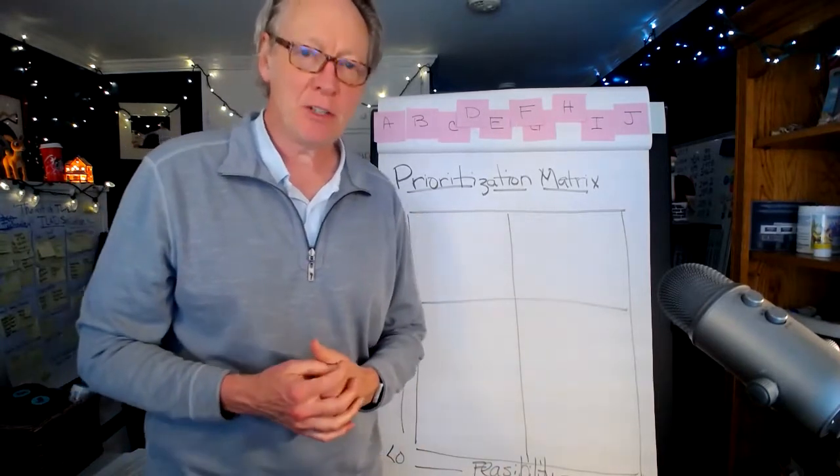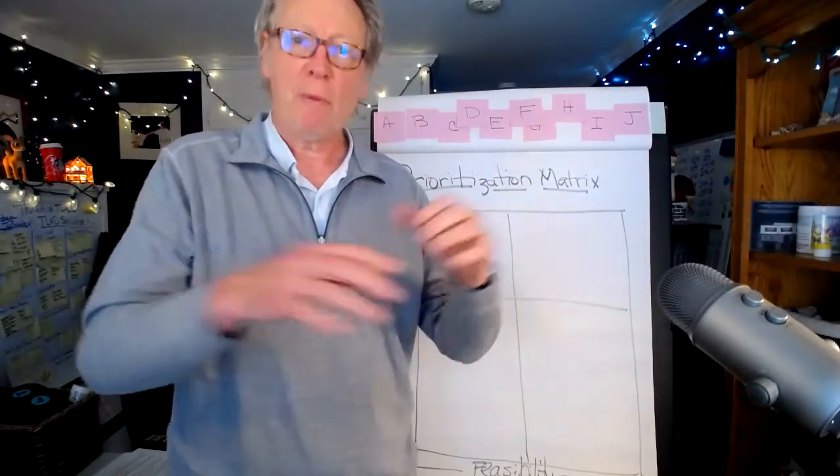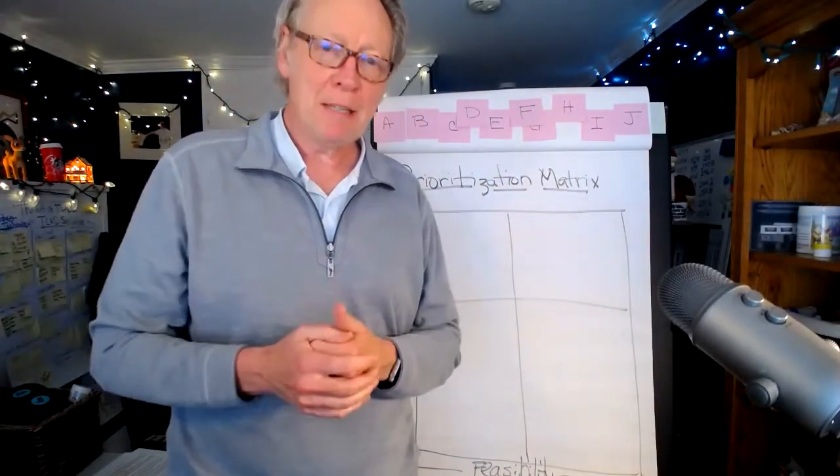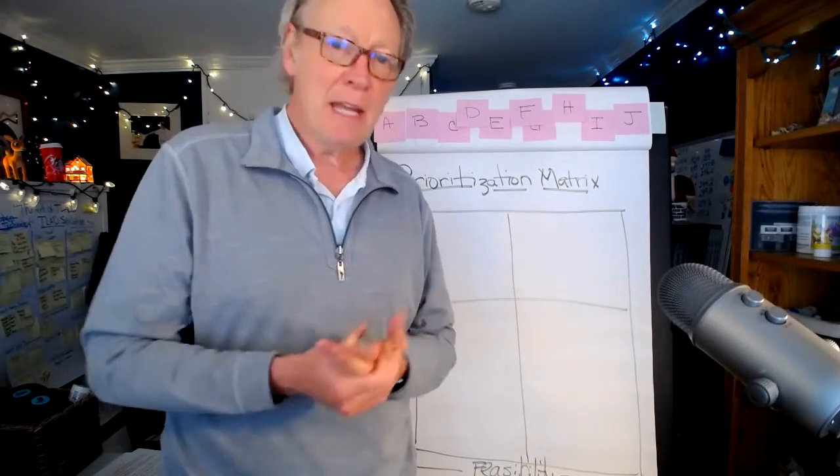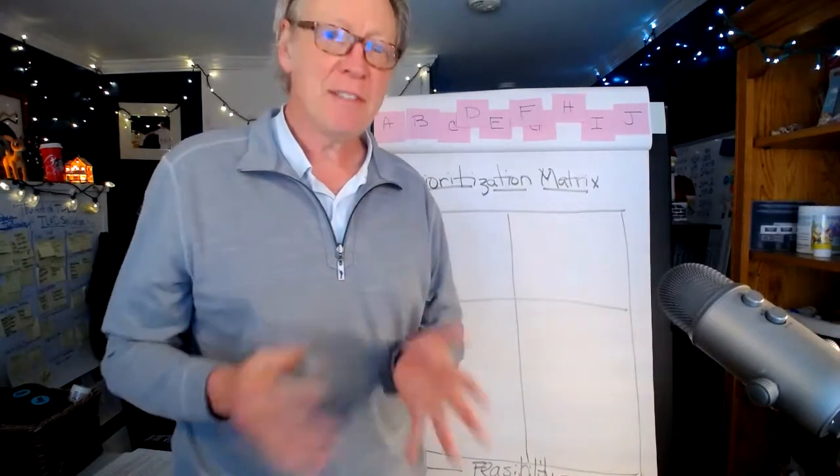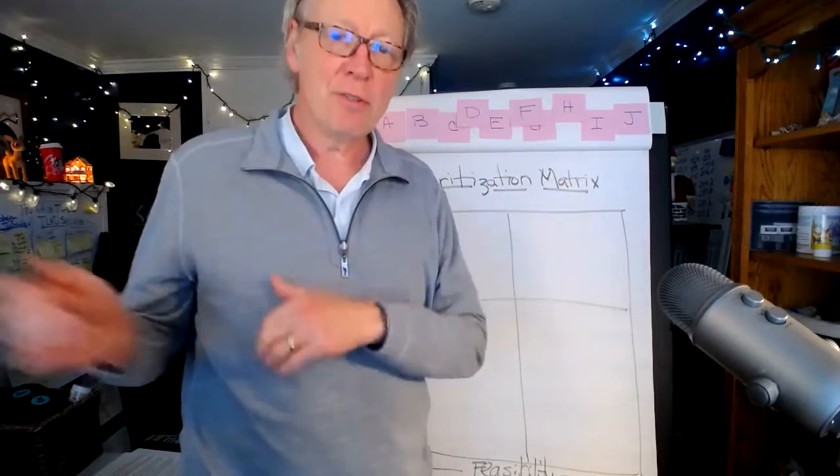Remember, the Thinking Like a Data Scientist process identifies a business initiative, corrals all the stakeholders who are impacted, identifies the decisions they make and the KPIs against which they measure the effectiveness of those decisions, and then groups those decisions and KPIs into use cases.